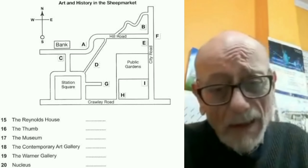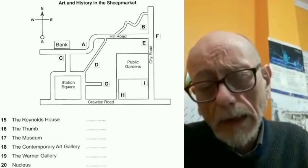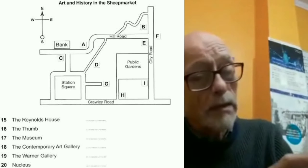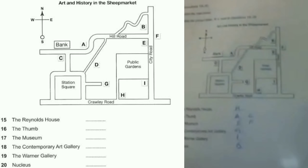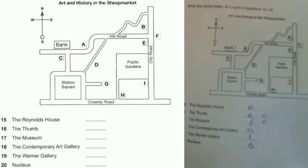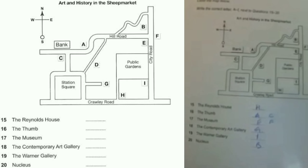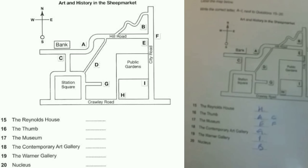I'll show you one, though I'm sorry you won't be able to see it terrifically clearly. This is the area it's dealing with. You can see on the map there are letters of the alphabet and below the place names — they're all back to front, but anyway it gives you an idea. You have to write the correct letter from the map next to the place name.